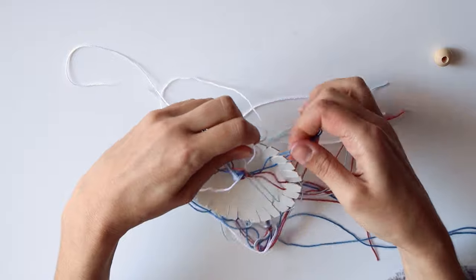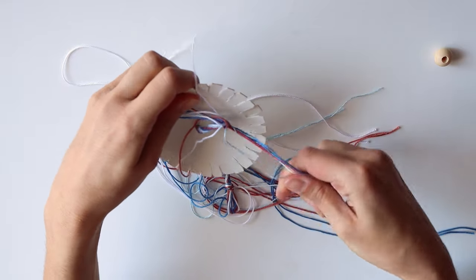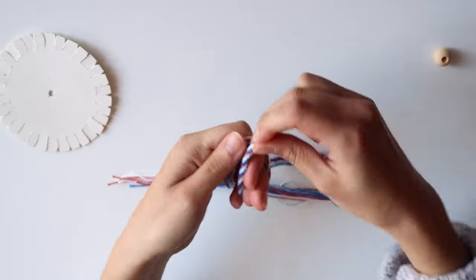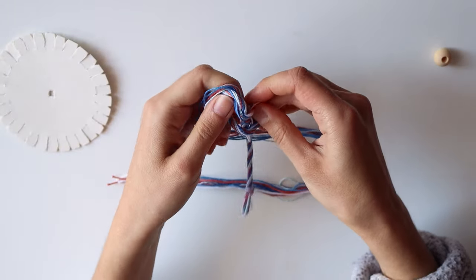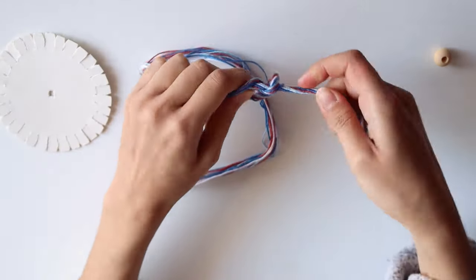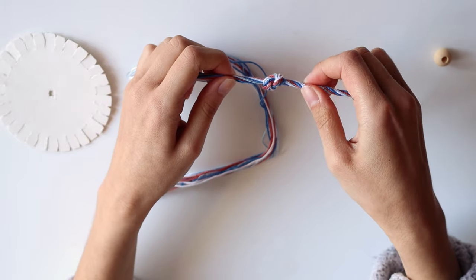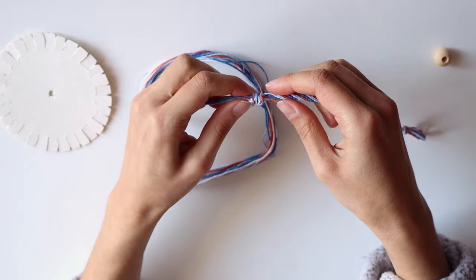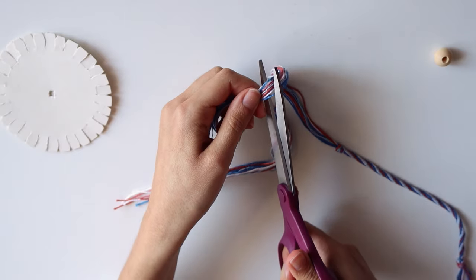Once you have it, remove the bracelet from the wheel and make a knot at the end of the braid. Trim some of the excess thread.